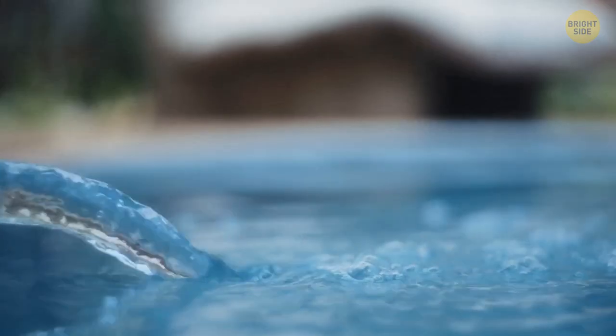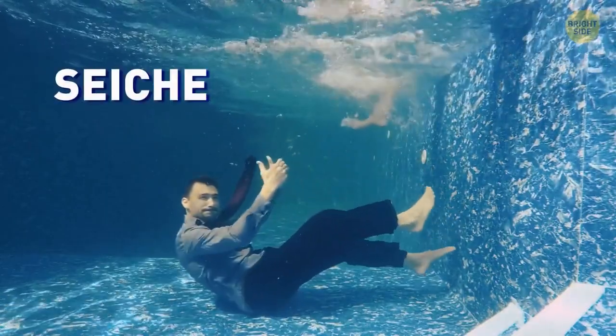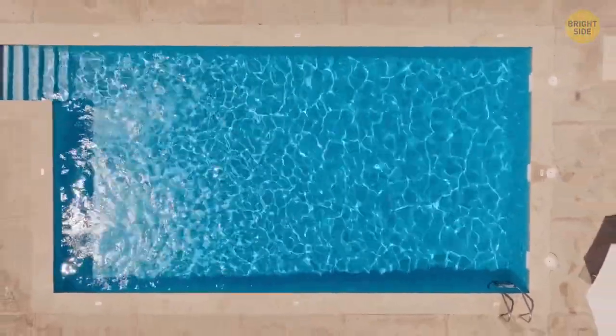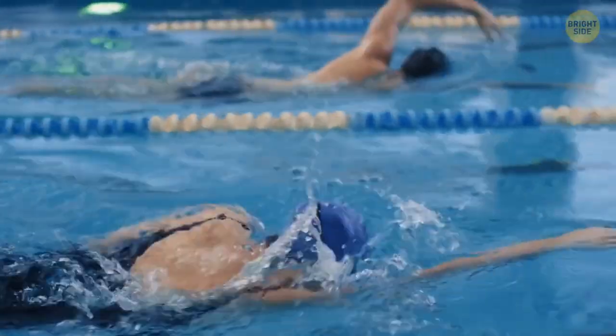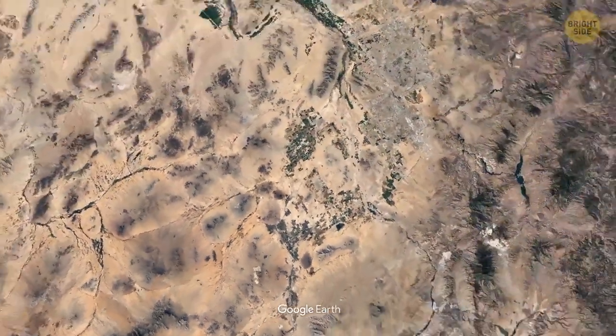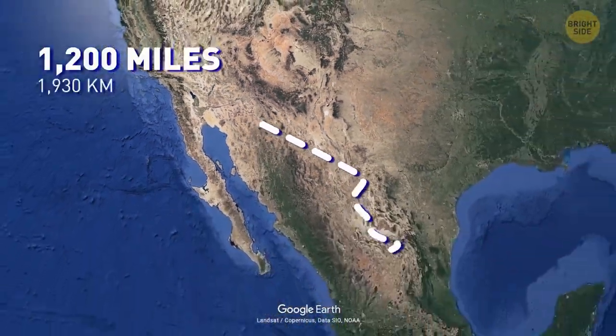Even after an earthquake is over, you might still see water sloshing around in your swimming pool. There's no need to worry. This is a phenomenon called a seiche. The water can keep sloshing around for hours after the earthquake is over. For example, the pool at the University of Arizona lost some water from a seiche caused by an earthquake in Mexico that occurred 1,200 miles away.